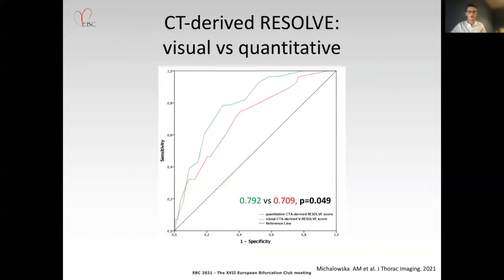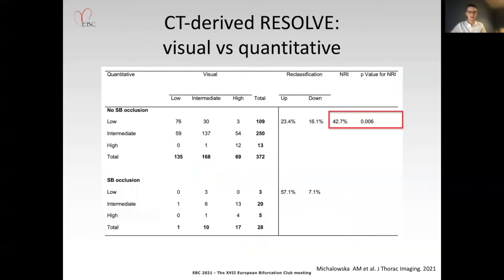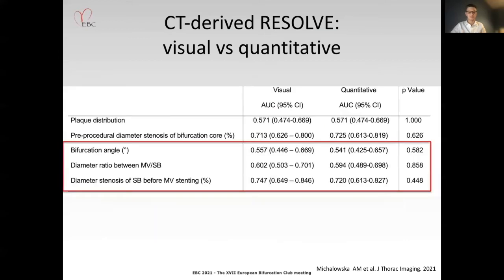The overall diagnostic capability of the CTA-derived Resolve Score was significantly higher compared with its quantitative counterpart. The reclassification analysis revealed that the CTA-derived visual Resolve Score correctly predicted more lesions with side-branch occlusion into the highest risk category compared with the quantitative CTA Resolve Score, thereby suggesting improved discrimination among lesions at greater risk of side-branch compromise. This observation may rely on numerically higher area under the curve of the CTA-derived visual Resolve Score for three out of four constituent elements.